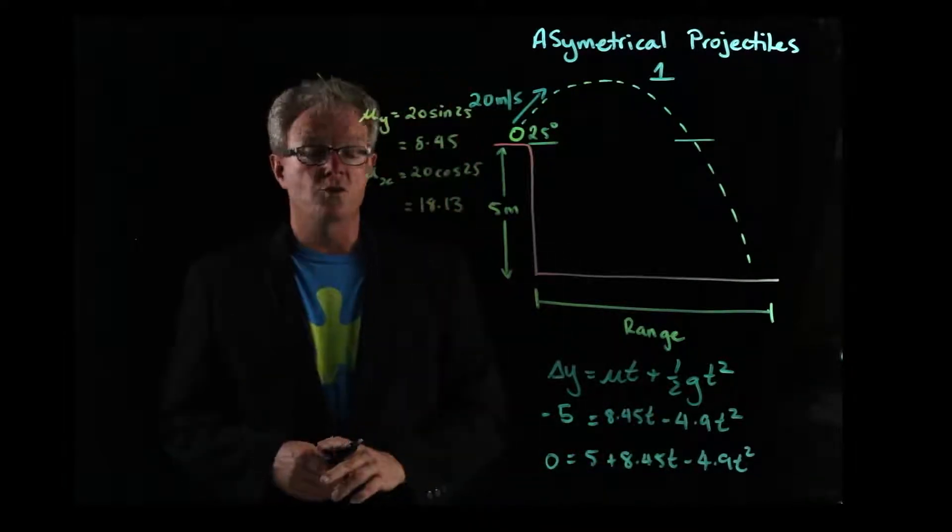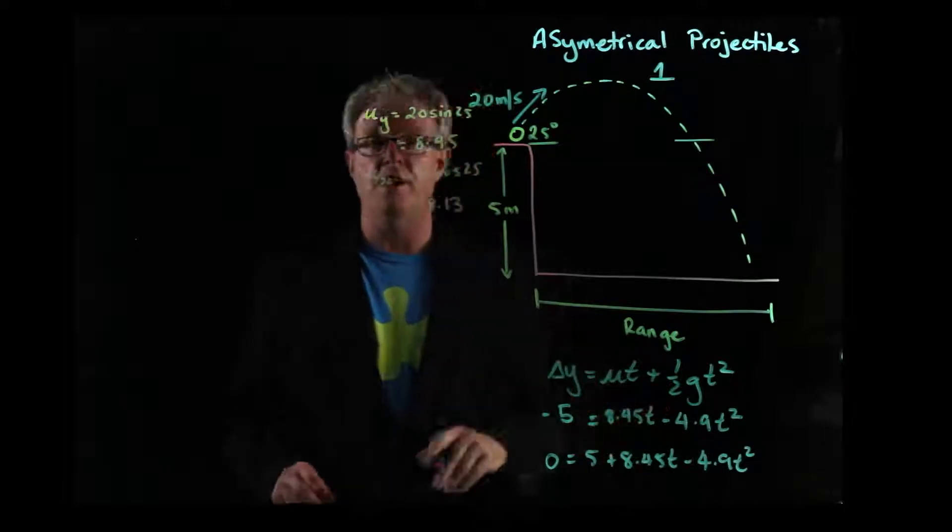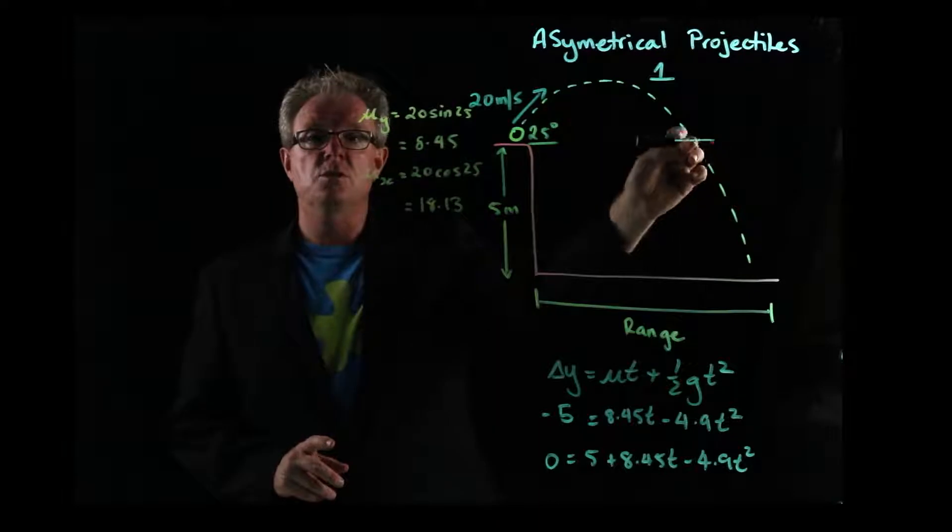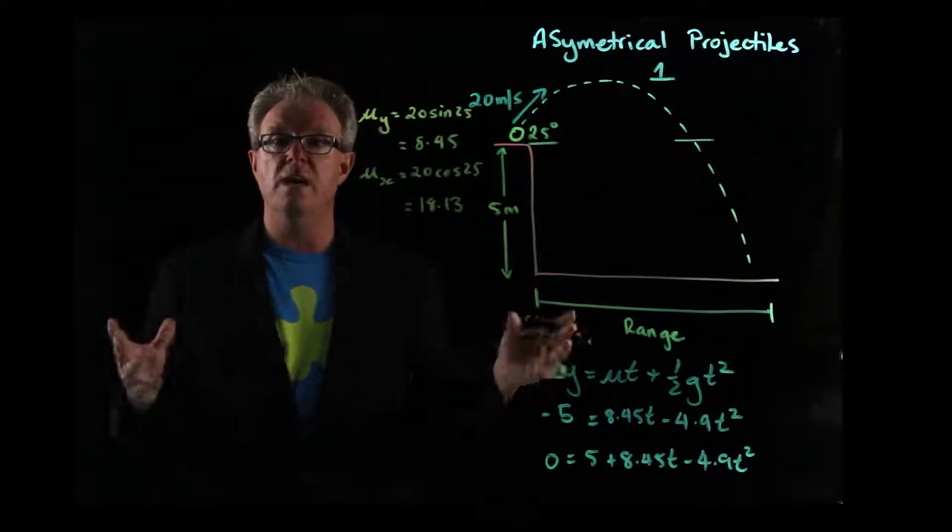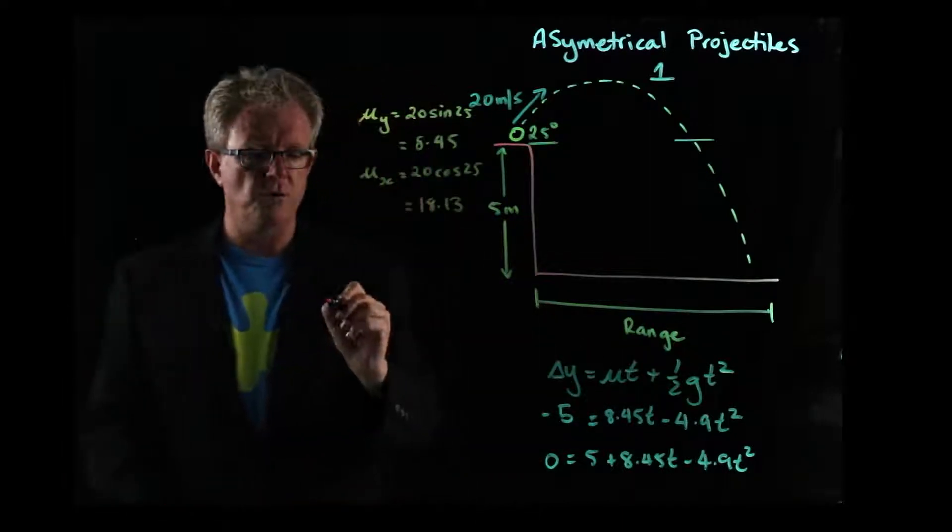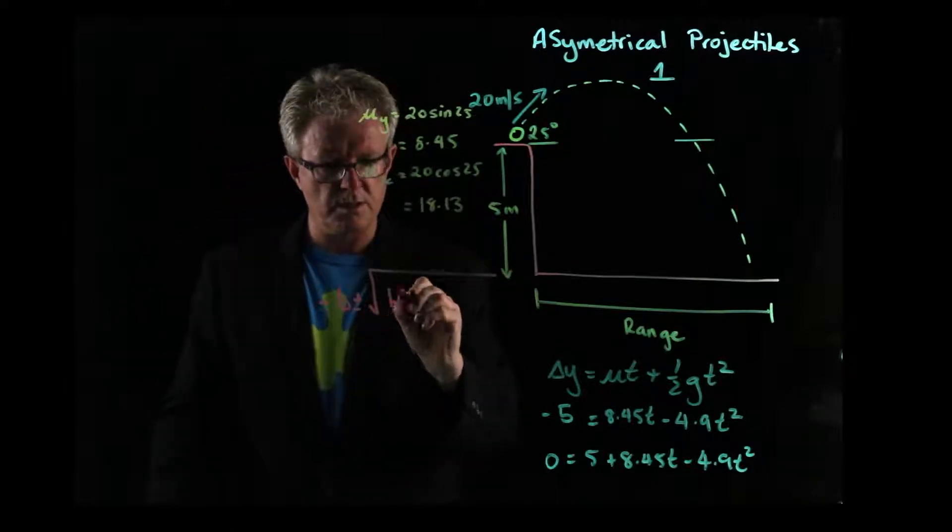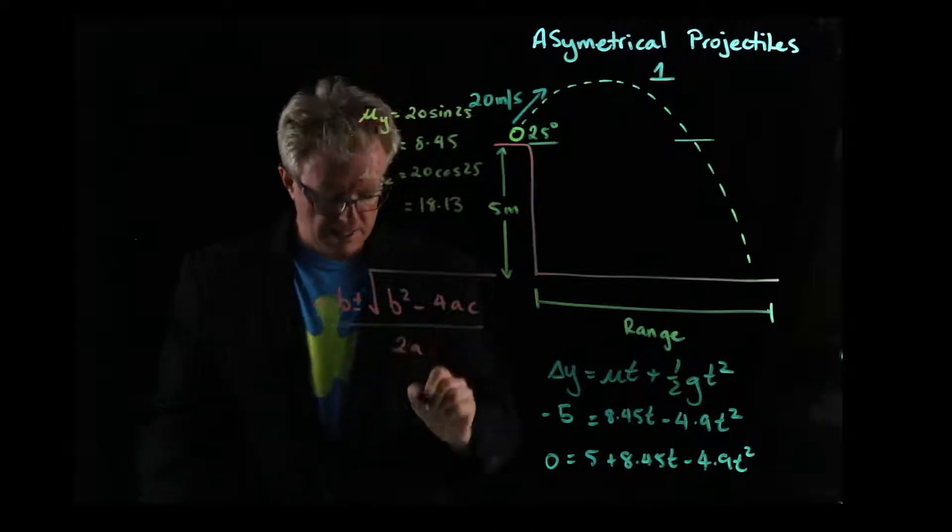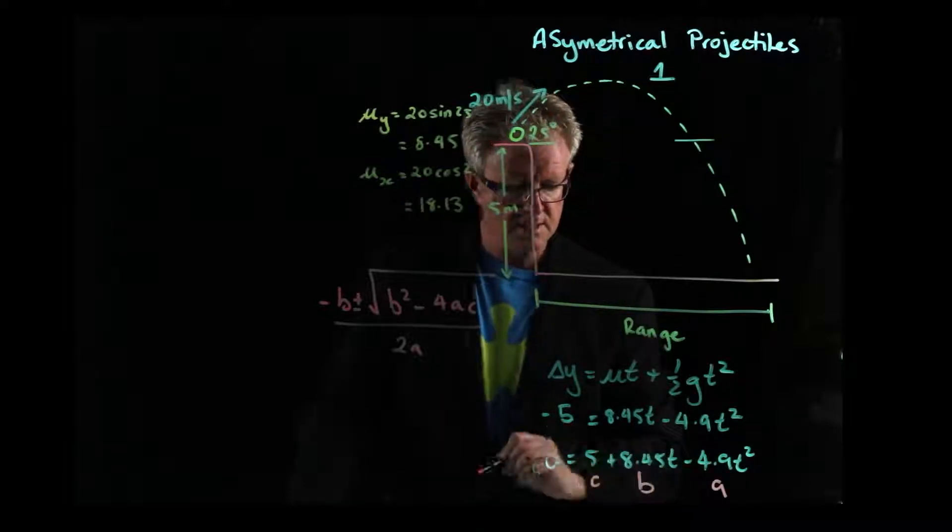And so now we have a quadratic equation. So now we have to use the quadratic formula to find out a value for t. So whenever you don't get a symmetrical situation, it's actually something like this, an asymmetrical, you're going to have to use a quadratic equation to find out a possible value for the time of flight. So the quadratic formula is minus b plus or minus the square root of b squared minus 4ac over 2a. And we have this being a, this is b, and that's c.